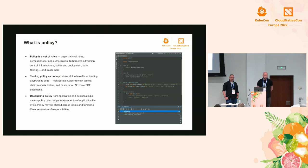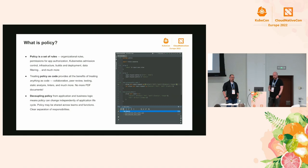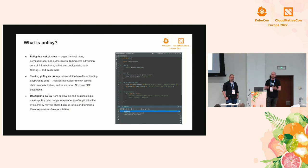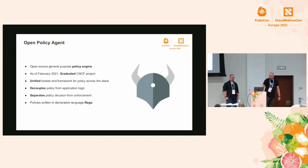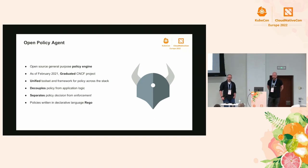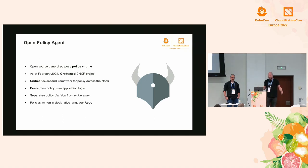The key concept of policy as code is decoupling. Just like you decouple storage from an application by moving it into a database, we believe that policy deserves the same kind of decoupling. The lifecycle of policy can be treated independently from the lifecycle of your application - you can make policy changes without having to redeploy or recompile. OPA is an open source general purpose policy engine. As of last year, it graduated as a CNCF project, offering a unified toolset and framework for working with policy across the whole stack.